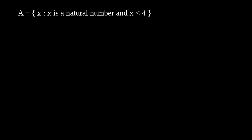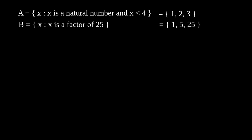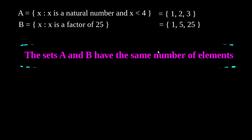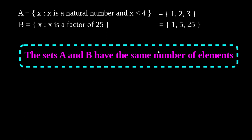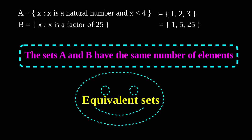Now the last type. Example: A equals {1, 2, 3} and B equals the set of factors of 25, which are 1, 5, and 25. Are the sets equal? No — the elements are not exactly the same. But notice: the number of elements in A is 3 and the number of elements in B is also 3. The cardinality of both sets is equal, so they are called equivalent sets.